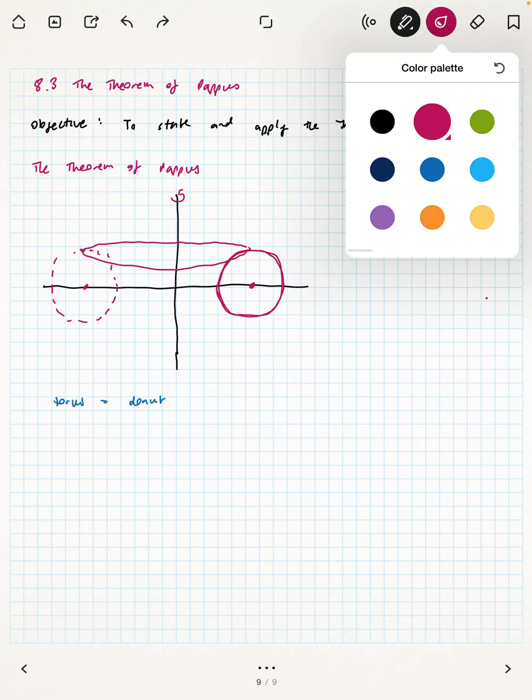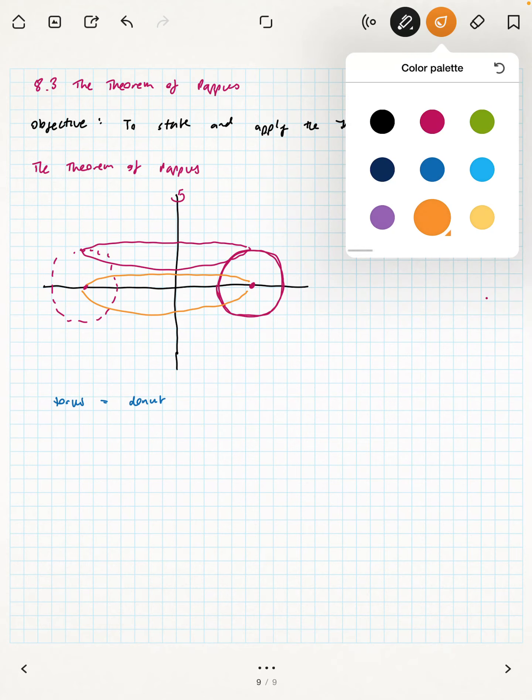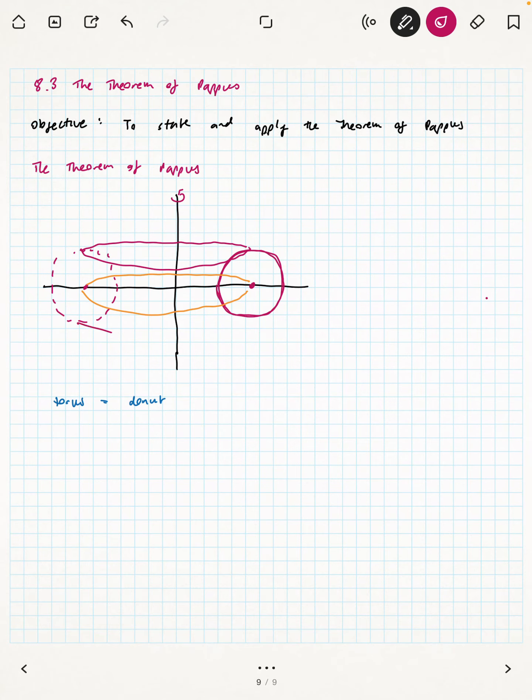And my drawing's not so great, but every point travels a circle around—sorry, let me use a different color for that one because that one's going to end up being significant. It travels a circle around that axis and it generates this solid that looks sort of like a donut.